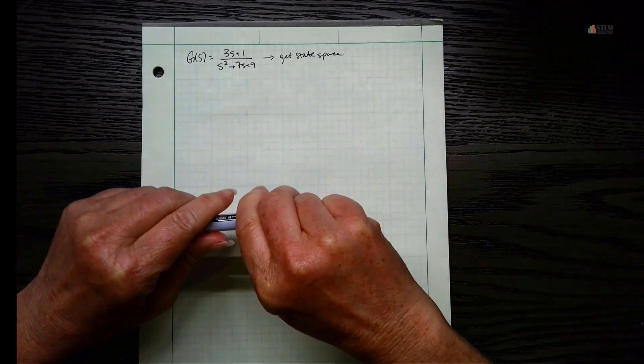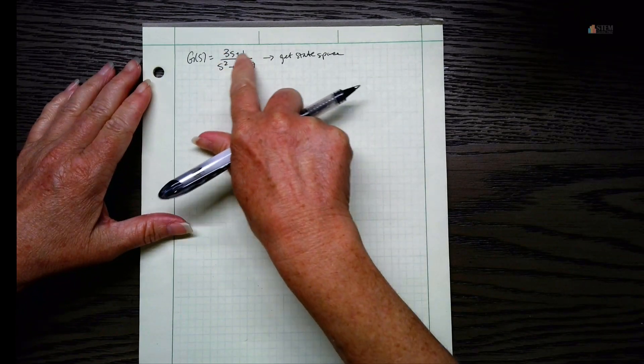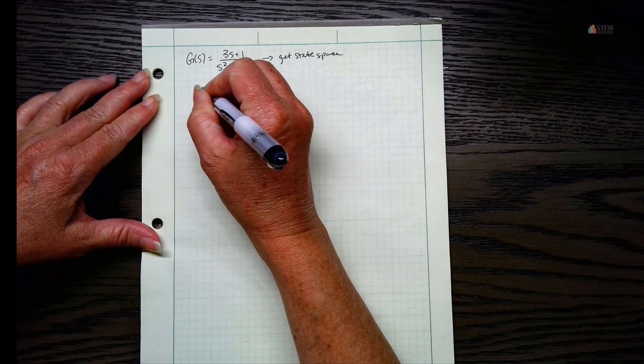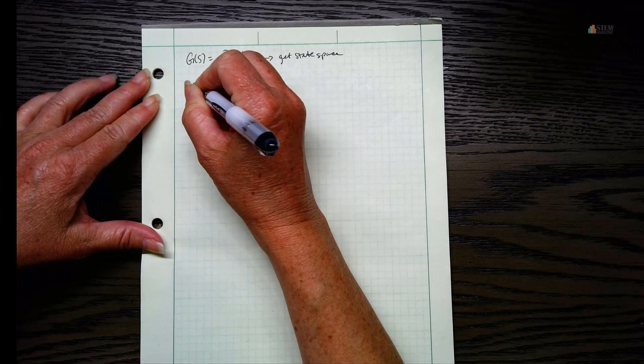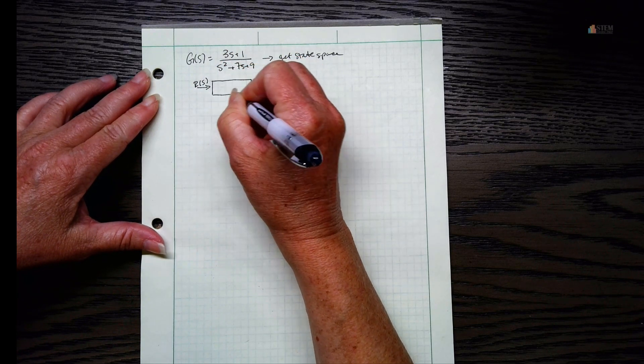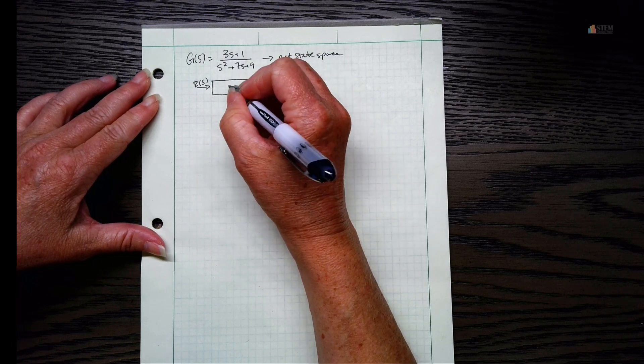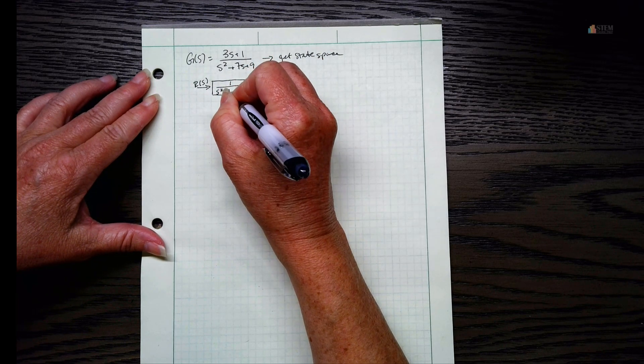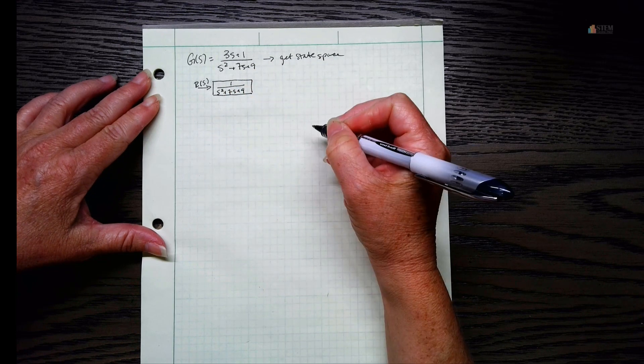So what we want to do first is split this up. Let's do block diagram form and write out what we've got. We're going to have our input R of S, and then let's just make the numerator a one and then we have our denominator.